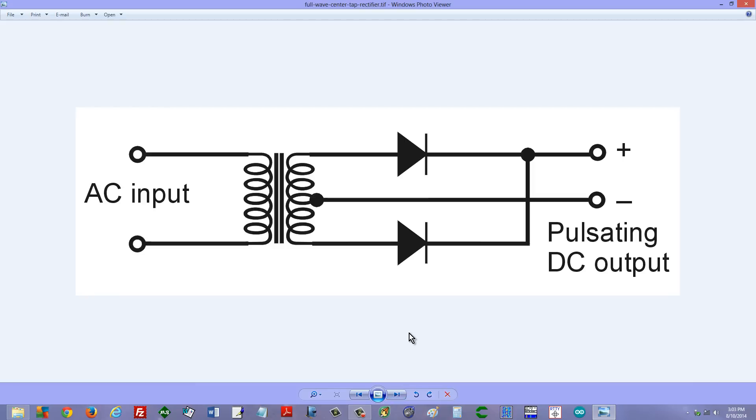Here is the circuit, a full wave center tap rectifier circuit. In the United States we put in 60 Hz alternating current to a circuit like this. In most of the rest of the world, 50 Hz. But the frequency isn't so important as what this thing actually does.